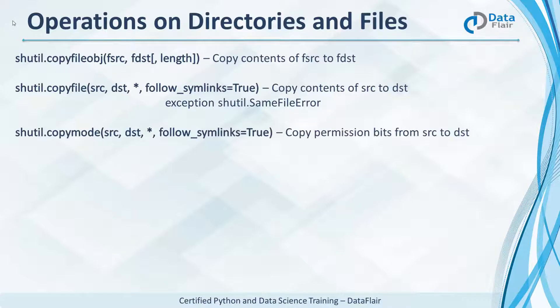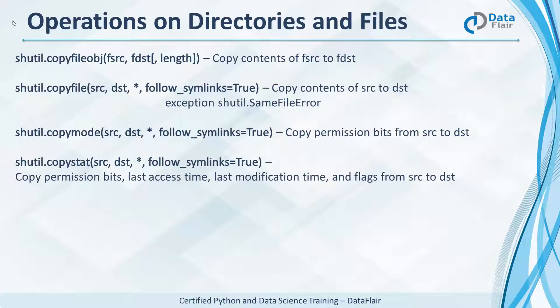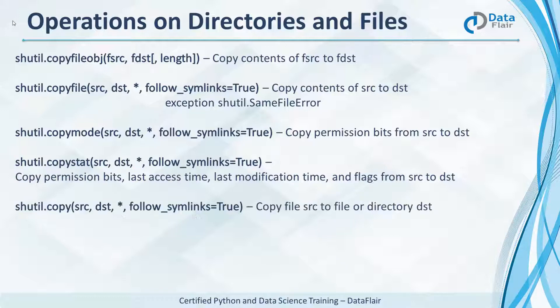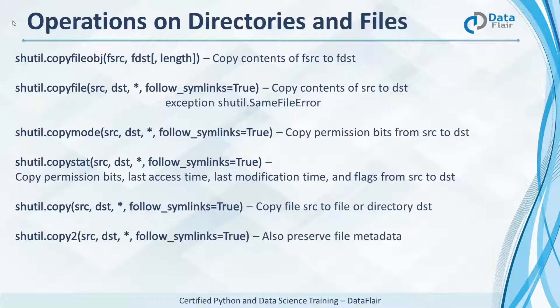copymode copies the permission bits from source to destination. copystat also copies the permission bits, last access and modification times, and the flags from the source to the destination. copy copies the file from source to destination. copy2 is like copy but it also tries to preserve the metadata.